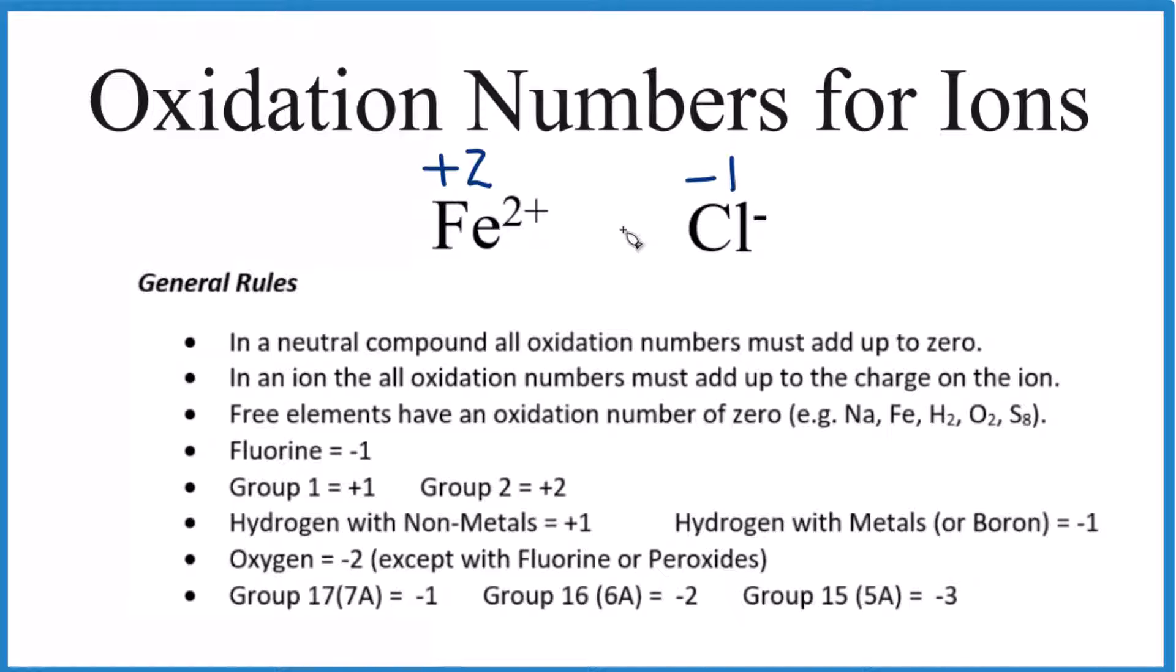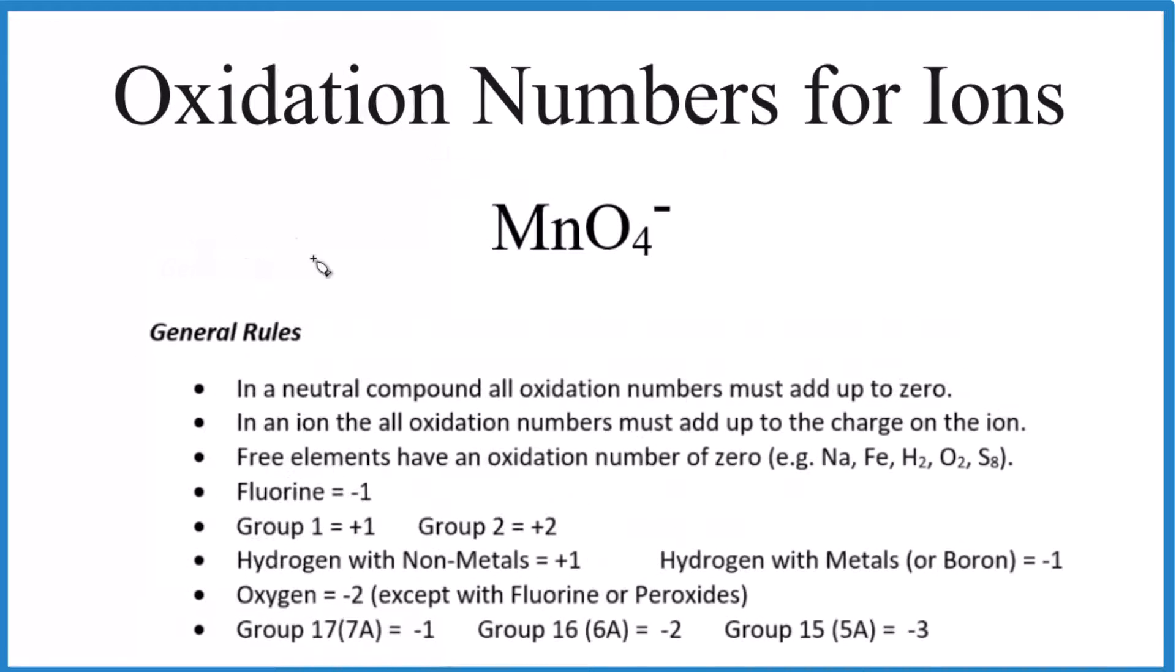It's when we get to the polyatomic ions, it gets more difficult. The key rule to understand here is when we have an ion, all of the oxidation numbers, they're going to add up to the charge on the ion.